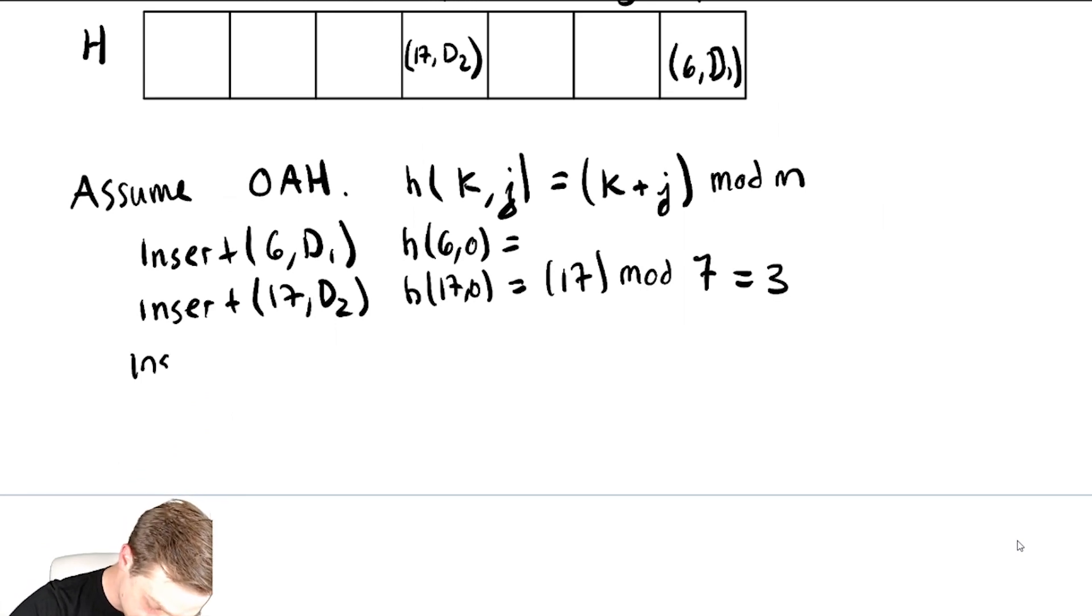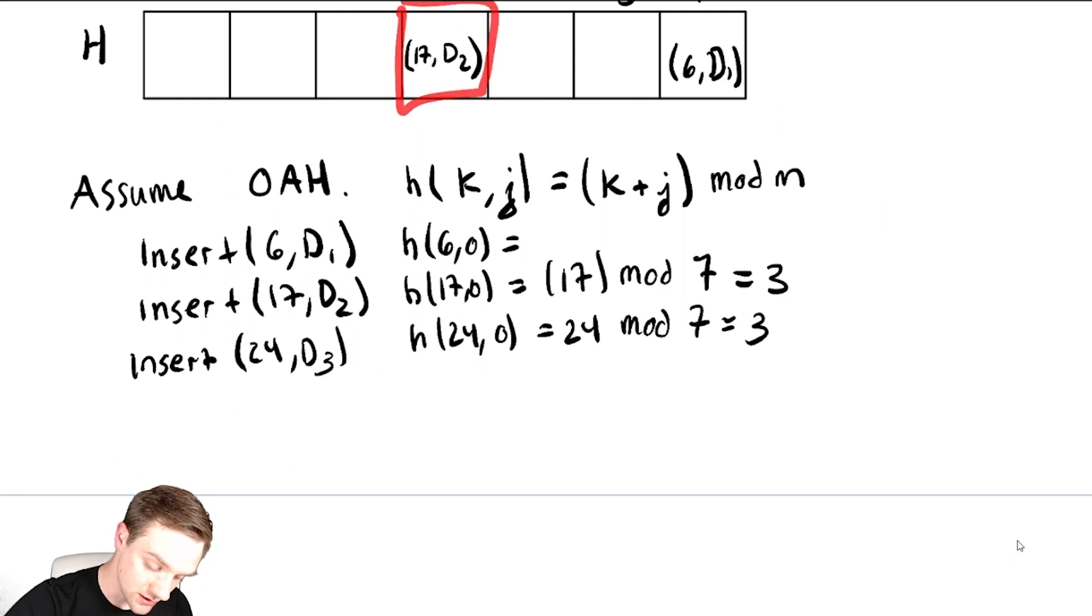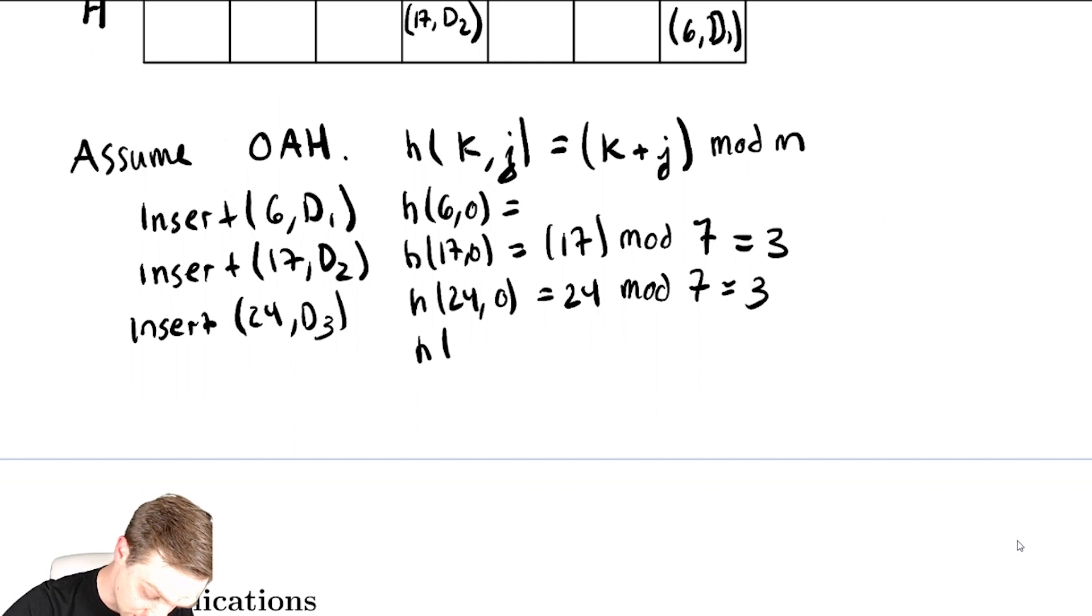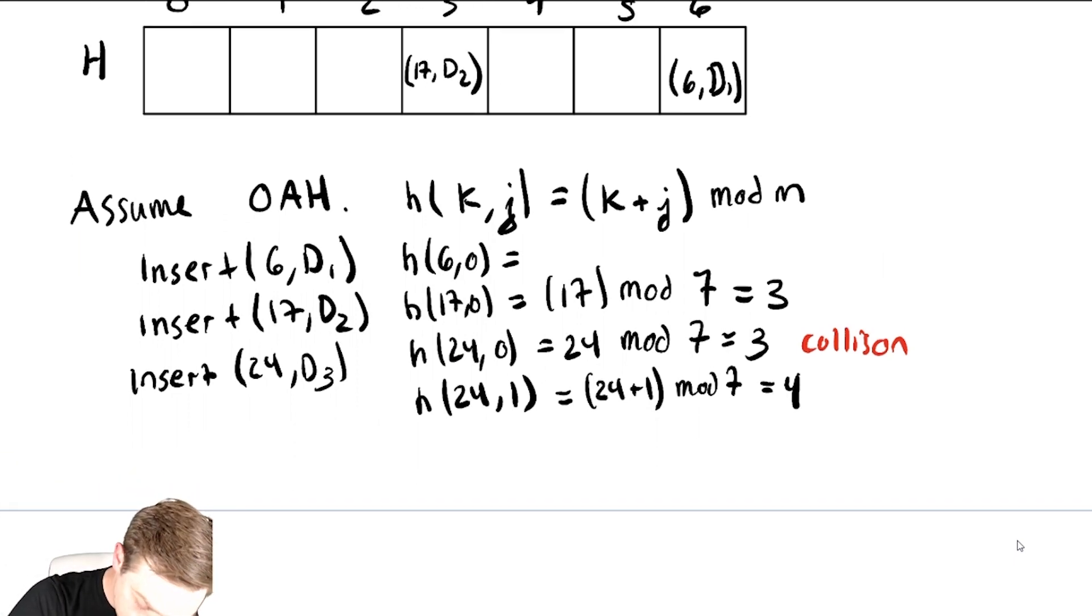Now let's suppose we did an insert of 24, d3. That gives us h of 24, 0, is 24 mod 7, that remainder is also 3, which means we get a collision when we try to insert at this location, location 3. And we must recompute. So let's compute h of 24, 1, and that is because we had a collision. So this is equal to 24 plus 1 mod 7, which is 4. It's one more than what we had before. So this equals 4, so we're going to insert 24, d3 at location 4.